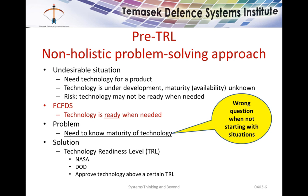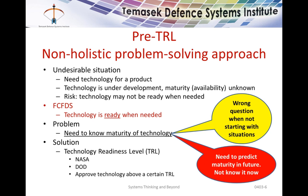You didn't start with the full situation. We need to predict the maturity in the future, not just know it now. The TRL is based on the maturity level in 1998 — where we are — but we really need to know the maturity in 1999 when we actually need it. So we're actually asking the wrong question. This is one of the key benefits of the problem-solving framework.